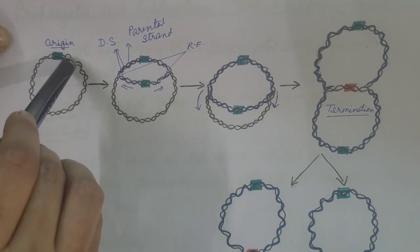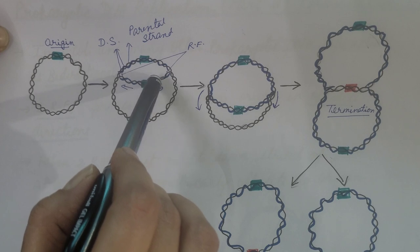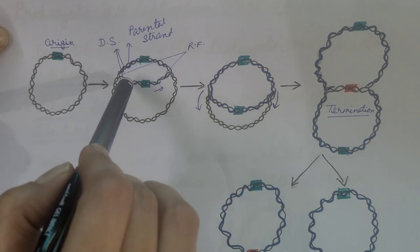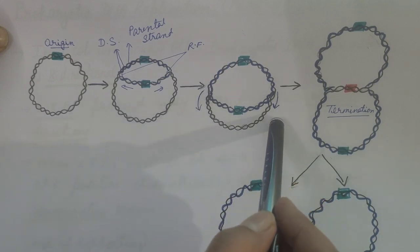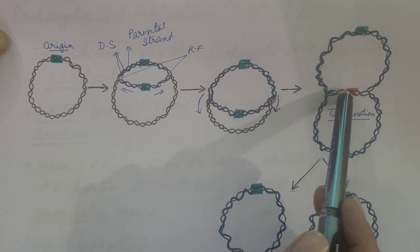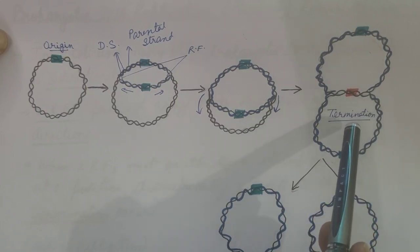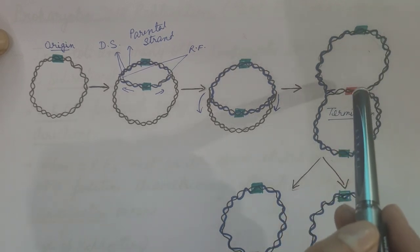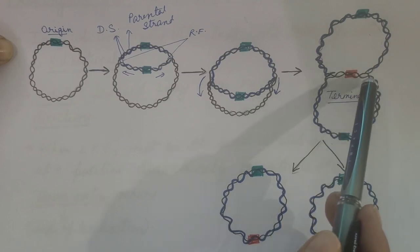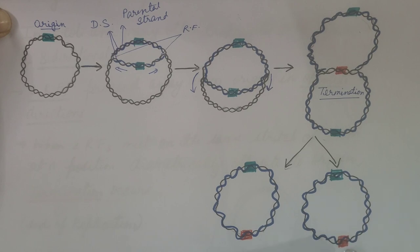This is the circular chromosome of E. coli. This is the origin of replication. As the replication starts, a replication bubble is formed. There are two replication forks which move away from the origin in opposite directions. The strand in black is the parental strand and the newly synthesized daughter strand is in blue. As replication proceeds, the two replication forks move — one in the clockwise direction and the other in the anti-clockwise direction. They meet at a region known as the terminus region where termination takes place, diametrically opposite to the origin. Two double-stranded DNA molecules are obtained, which are catenated and separated by topoisomerase, then transferred to a daughter cell each.